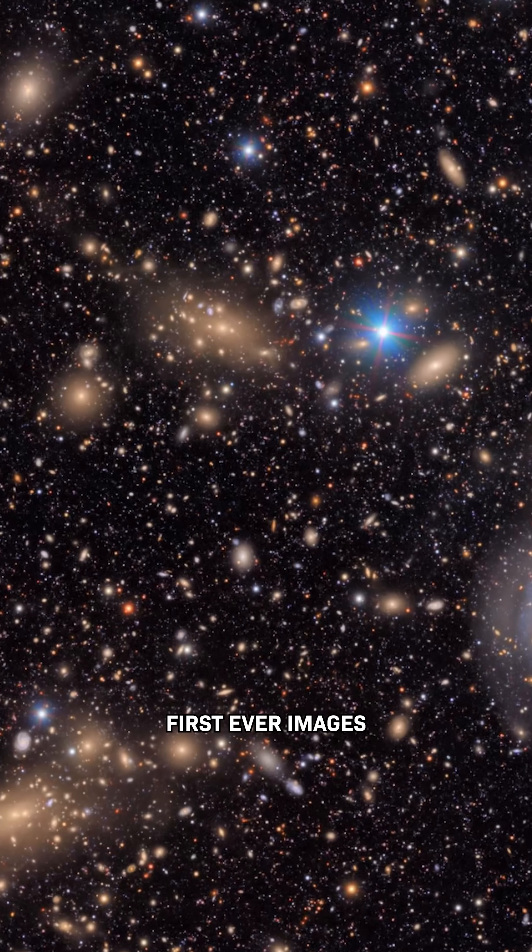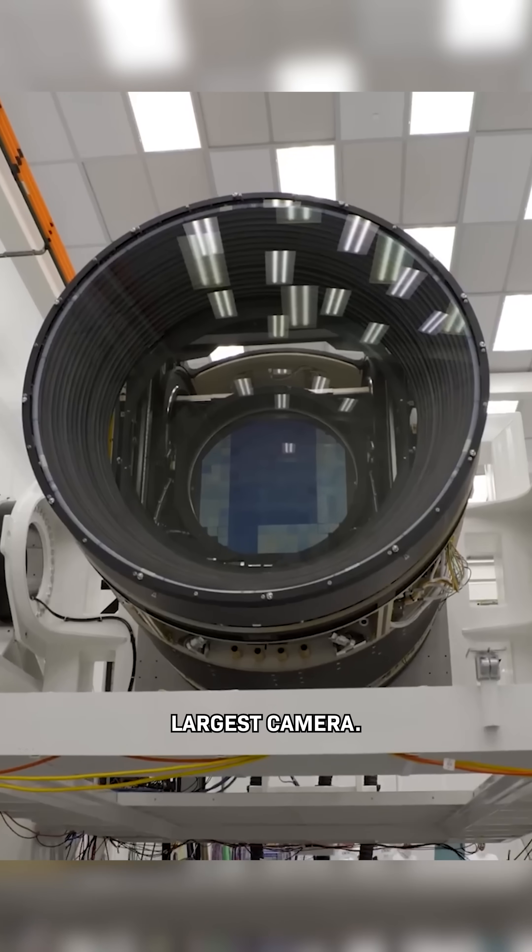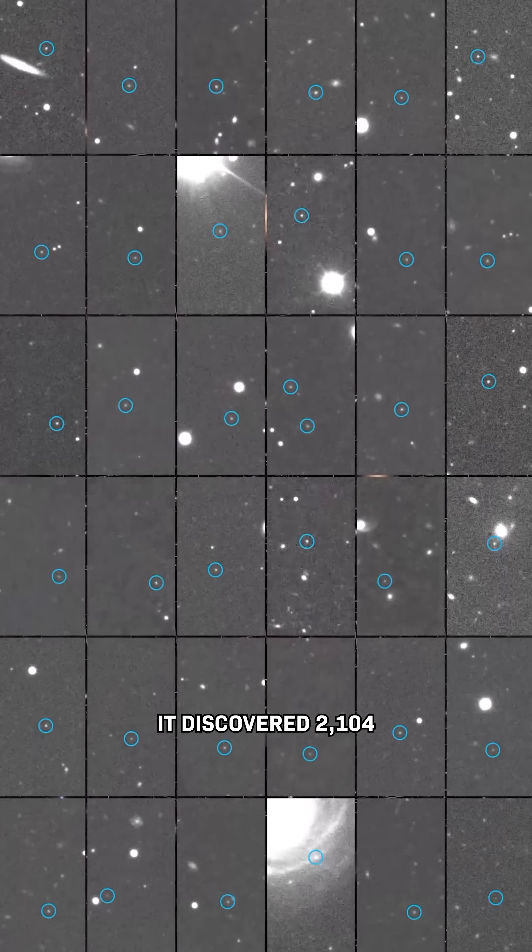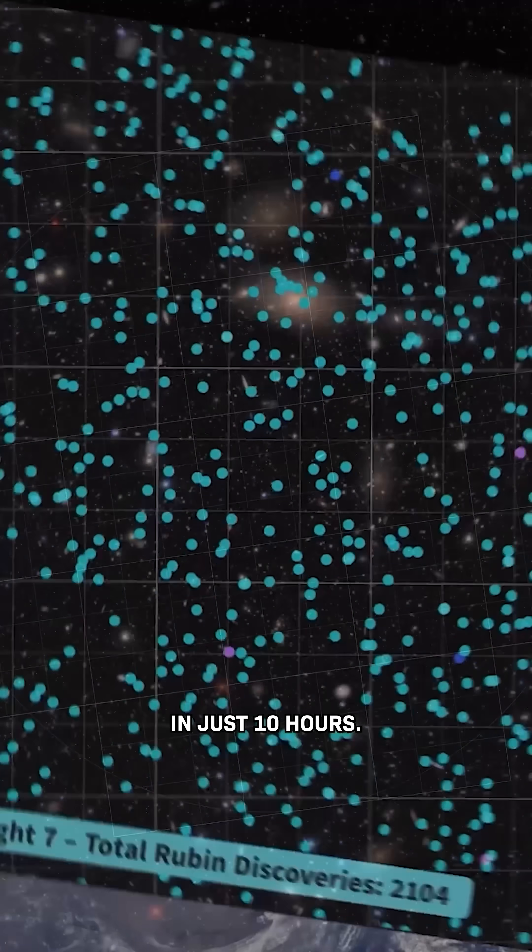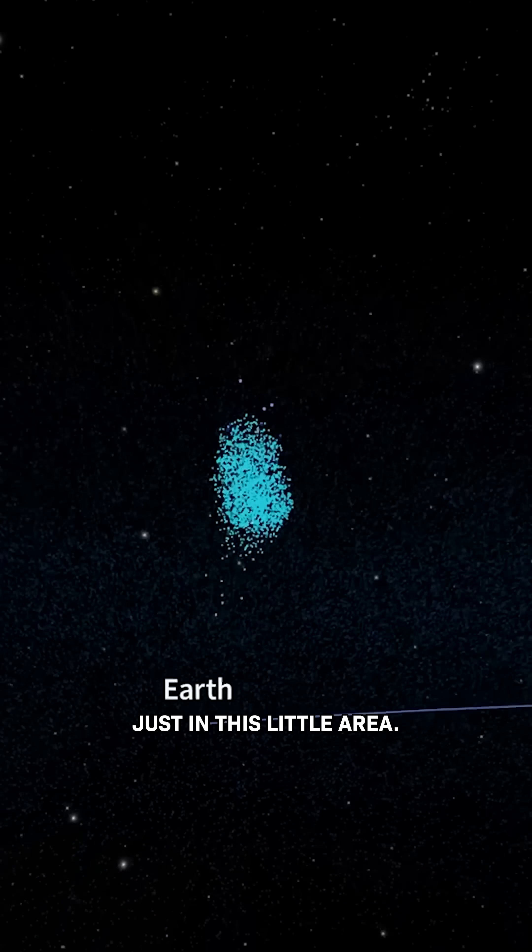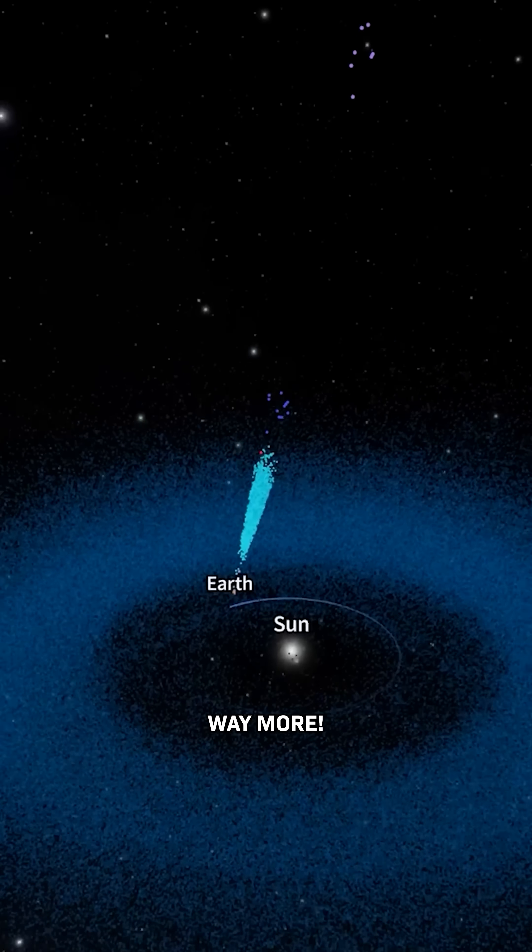Look at this! These are the first-ever images from the new world's largest camera. It discovered 2,104 new asteroids in just 10 hours, just in this little area. So it's probably going to find way more.